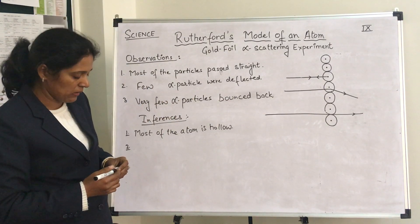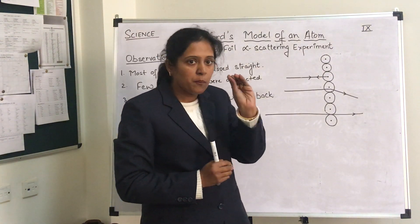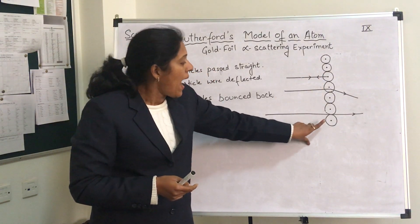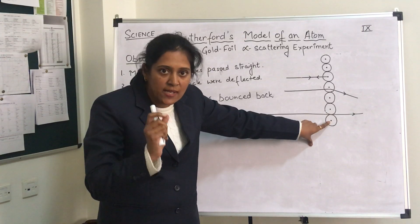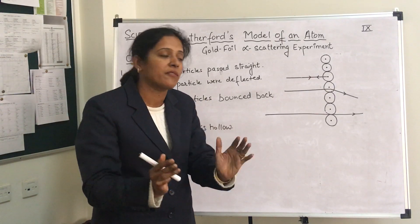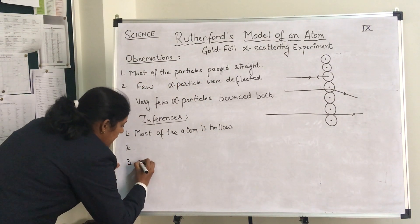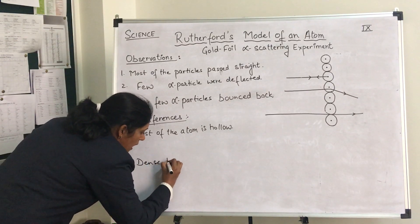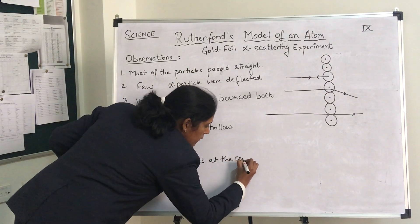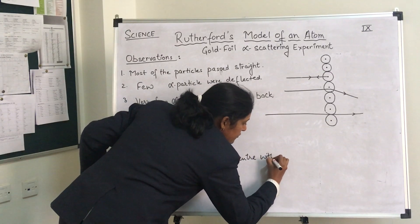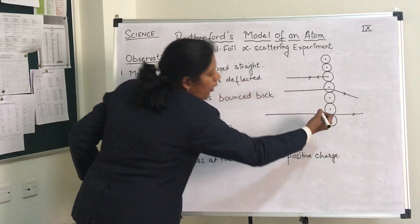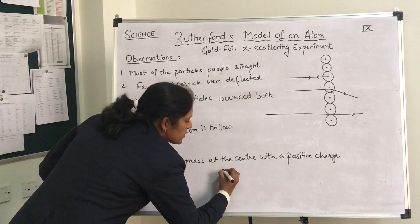Now coming to the third observation first: very few alpha particles bounced back. This showed that there was something present in the atom that had a positive charge — that's why they bounced back — and it had a large mass. It was a dense body, and the size of this dense body was very small compared to the size of the atom. So he said there is a dense, hard mass at the center with a positive charge, and this central body was termed the nucleus.